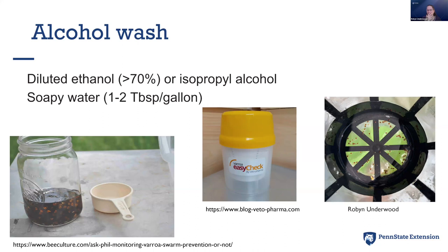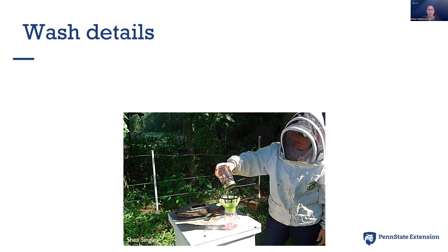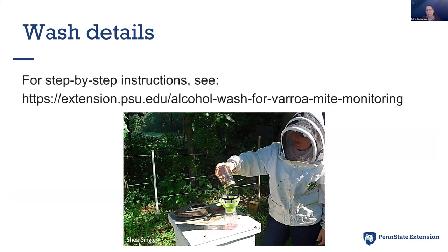I have a fact sheet about using household products or things you can buy locally to do your alcohol washes, or there are commercial products available. One commercial product is called the Varroa Easy Check — for that, you count the mites in the bottom of the liquid. With my method, you pour it through a filter and can see all the mites — sometimes you don't even need to count to know the colony is in trouble. Step-by-step instructions are available at extension.psu.edu by searching 'alcohol wash.'